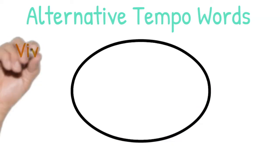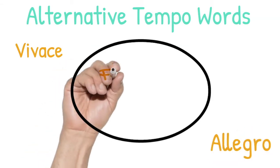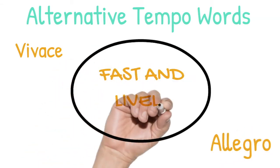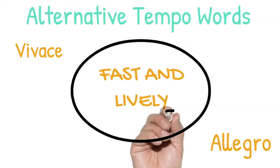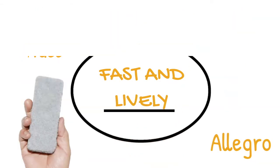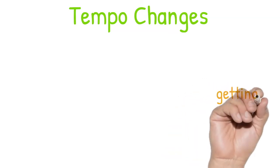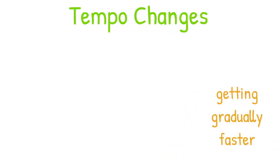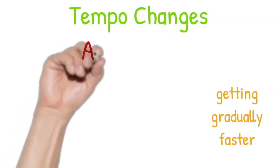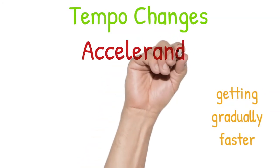And you may see the word vivace, which is a fast, lively tempo. The tempo doesn't always stay the same throughout a piece of music — just like our dog walking scenario earlier, it can change. Sometimes the tempo can gradually get faster.